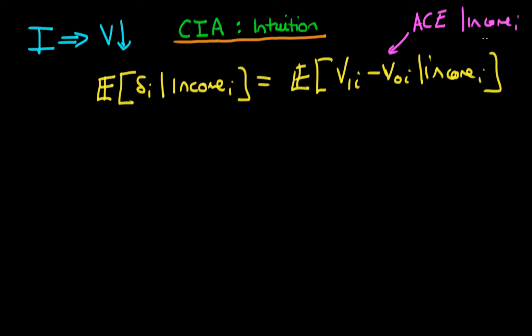In this video, I want to provide a little bit of intuition for what exactly we mean by given a district's level of income. So writing it out mathematically, essentially what we have is that V1i and V0i are independent of Di given a district's level of income. So that's the income of a district i. So what exactly does this mean conditional on the income of a particular district?